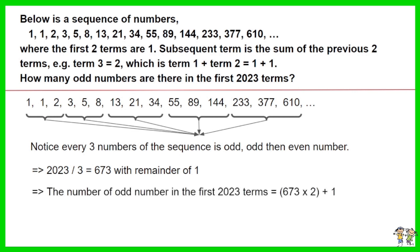As such, the number of odd numbers in the first 2023 terms is equal to 673 times 2, then plus 1. Solve the equation. The answer is 1347.